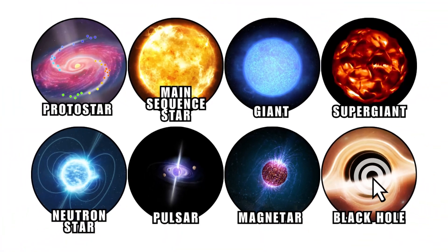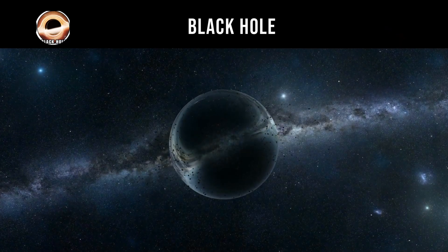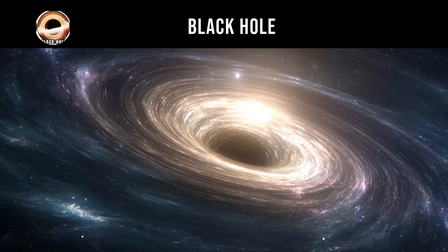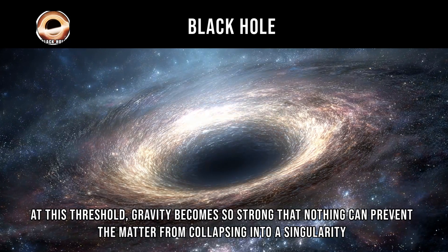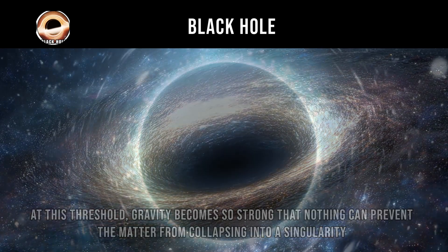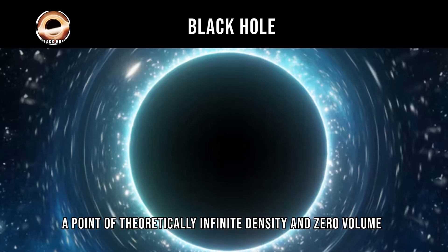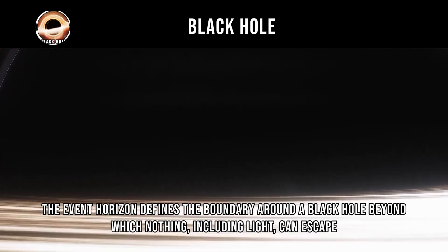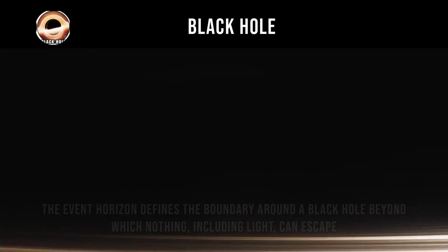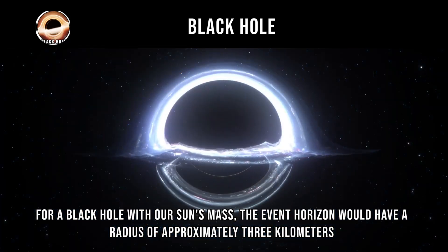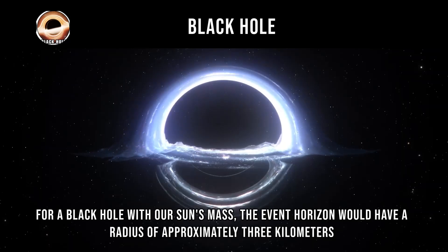Black Hole. Black holes form when neutron stars exceed approximately three solar masses, the point where even neutron degeneracy pressure cannot resist gravitational collapse. At this threshold, gravity becomes so strong that nothing can prevent the matter from collapsing into a singularity — a point of theoretically infinite density and zero volume. The event horizon defines the boundary around a black hole beyond which nothing, including light, can escape. The radius of this boundary, called the Schwarzschild radius, depends directly on the black hole's mass; for a black hole with our sun's mass, the event horizon would have a radius of approximately three kilometers.